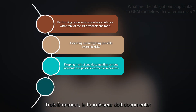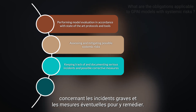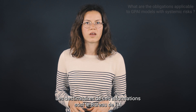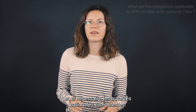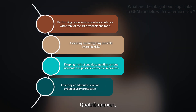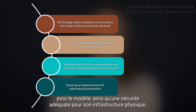Third, the provider must keep documents and report, with due diligence, information about serious incidents and possible corrective measures to address them. The recipients of such information are the AI office and, if appropriate, national competent authorities. Fourth, the provider must ensure an adequate level of cyber security for the model, as well as adequate security for its physical infrastructure.